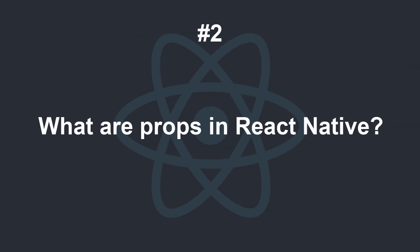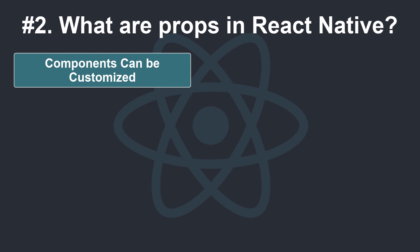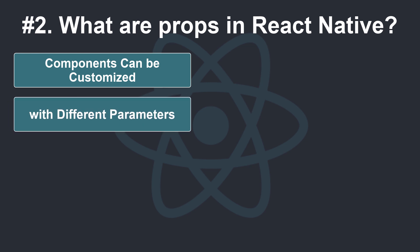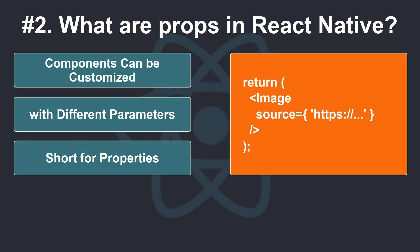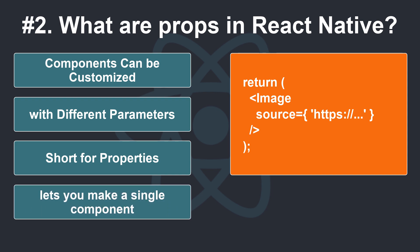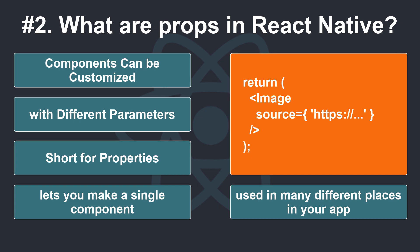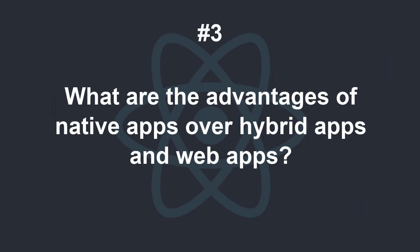What are props in React Native? Most components can be customized when they are created with different parameters. These created parameters are called props, short for properties. For example, one basic React Native component is the image. When you create an image, you can use a prop named source to control what image it shows. Your own components can also use props. This lets you make a single component that is used in many different places in your app, with slightly different properties in each place by referring to props in your render function.